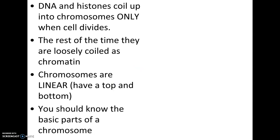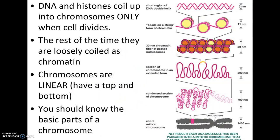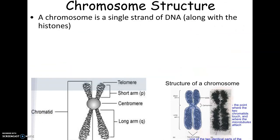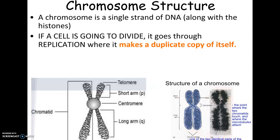The chromosomes are linear — they have a top and a bottom. This picture in your outline shows how the DNA double helix ends up coiling tighter and tighter into the super-tight chromosome. We're going to go through the structure of a chromosome on the next slide.